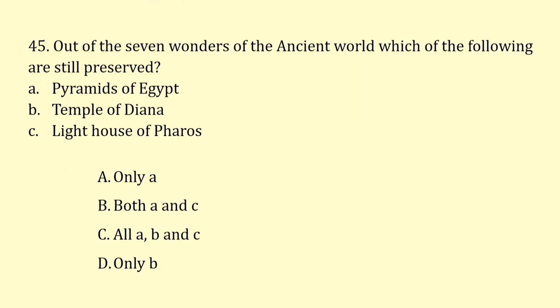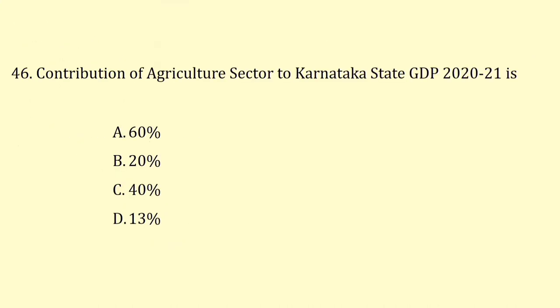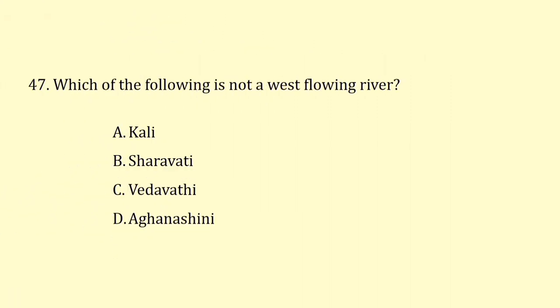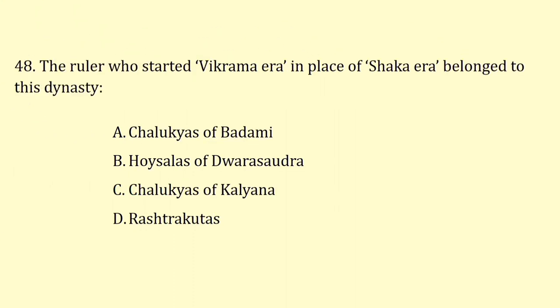Out of the seven wonders of the ancient world, only the Pyramids of Egypt are still preserved, so the answer is option A. Contribution of the agriculture sector to Karnataka state GDP in 2020–21 is 13%. The river that is not a west-flowing river is Vedavati. The ruler who started the Vikrama era in place of the Shaka era belonged to the Chalukyas of Badami.